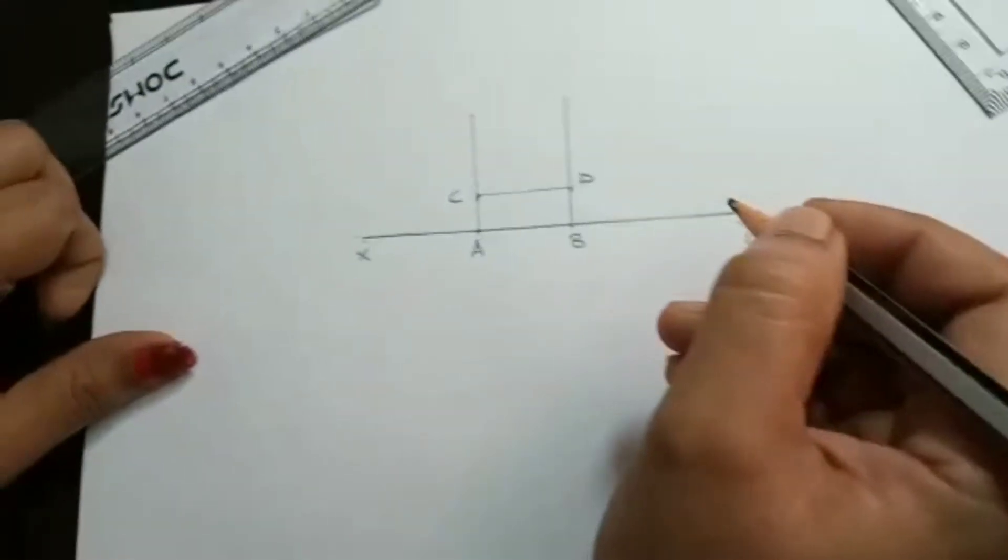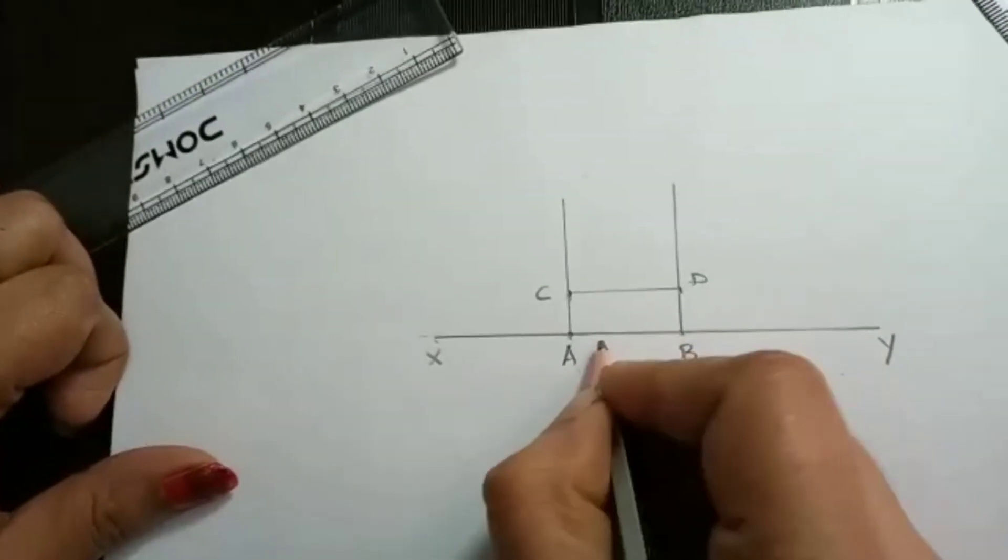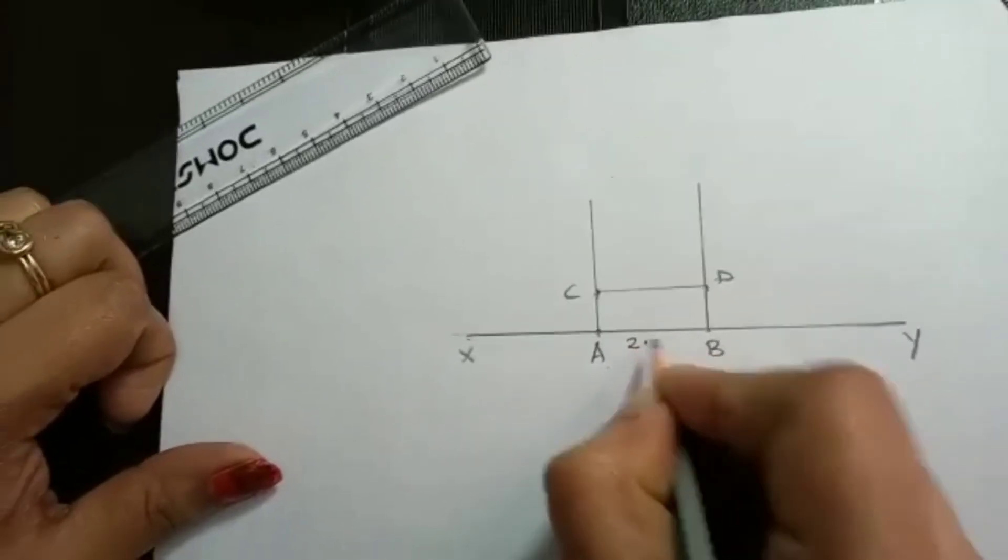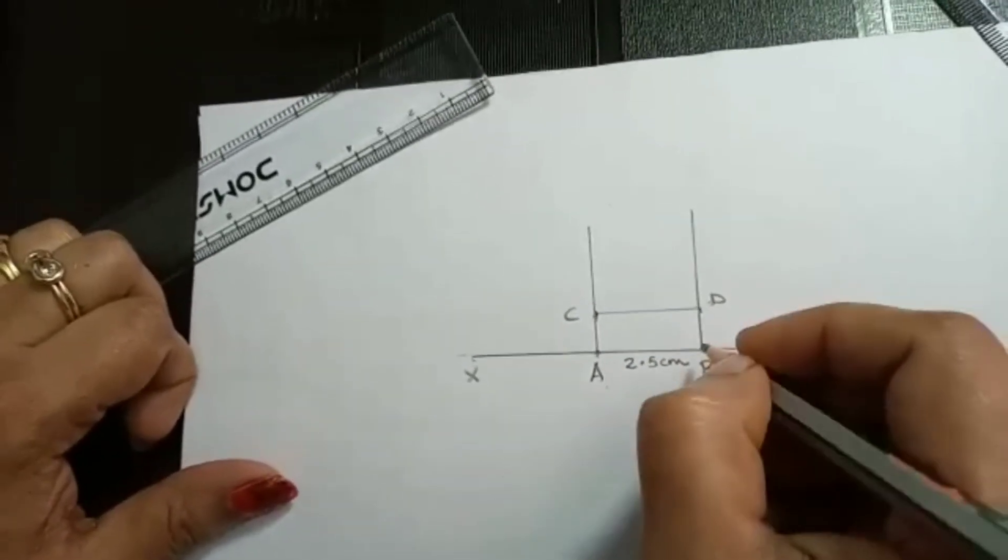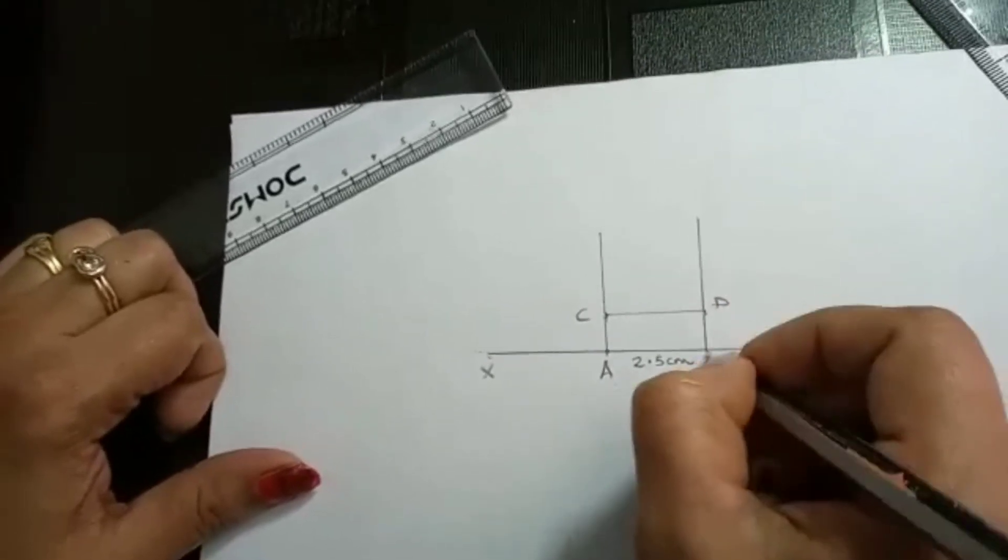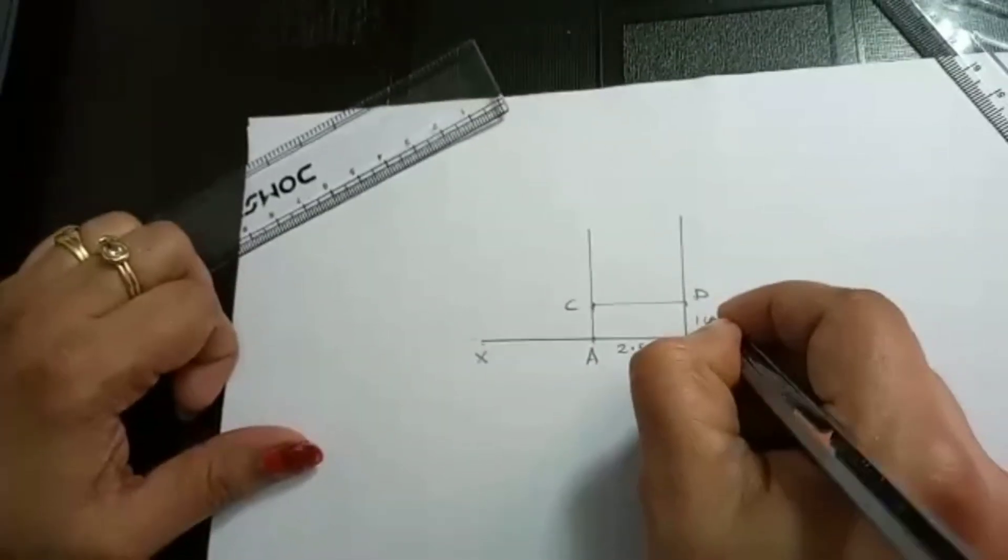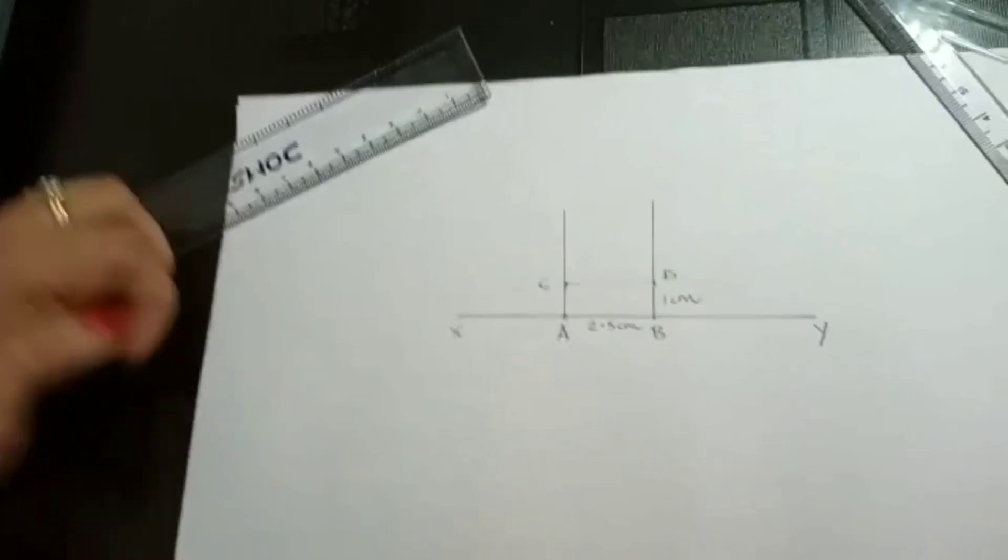So now what you got. You got a rectangle with AB 2.5 cm and AD, this side, it is 1 cm. Thank you.